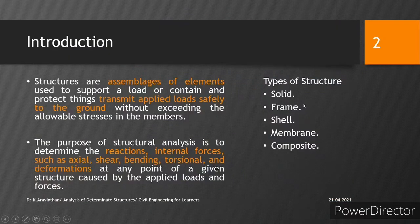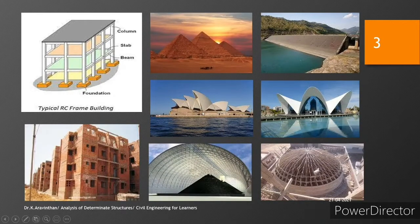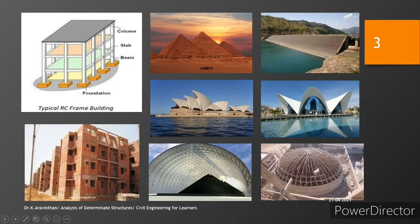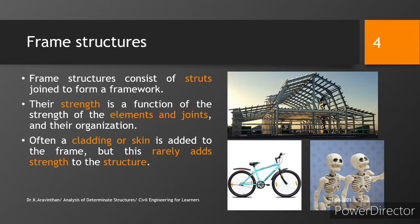The next type is shell structure. In a shell structure, you cannot see any beam, column, or bricks. These structures have non-conventional dimensions for architectural purposes. You can make the structure into any form and any shape. These shapes can be derived and the forces can be identified using the shell structure. The next type is membrane structure, which is used for large openings and large gatherings.